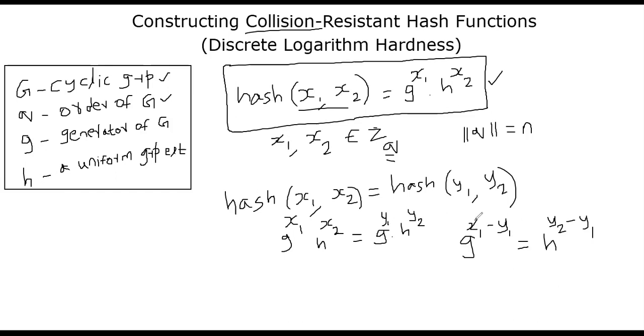Because that means your x1 will be equal to y1, x2 will be equal to y2, which is not the actual definition of a collision. Collision assumes that the inputs are different, but outputs are the same. So y2 minus x2 must be non-zero. That means y2 minus x2 has multiplicative inverse.